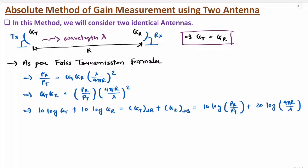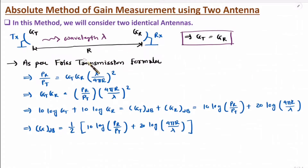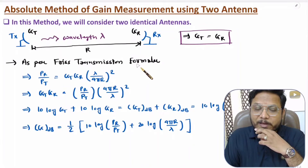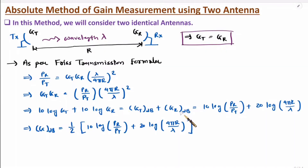Since Gt and Gr are equal, the resultant gain of one antenna is half of their sum. So the gain in dB equals half of [10 log(Pr/Pt) + 20 log(4πR/lambda)]. This equation will be used again in the next two methods. That is how we identify gain using two identical antennas with the Friis transmission equation.